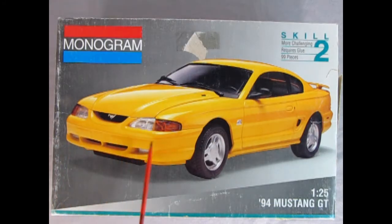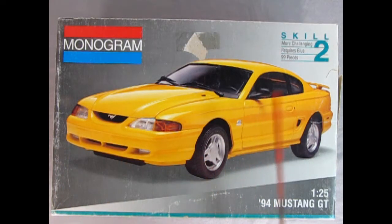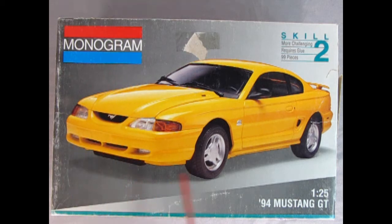Now here we've got our 1994 Mustang GT and I know this box is not in the best of shape. It is one that I got second hand. However this model kit is a skill level 2 containing 99 pieces. You will need paints and glue and it will work out to be a wonderful model.